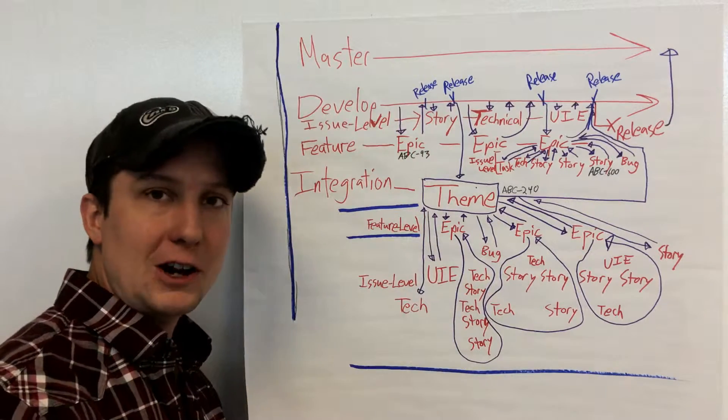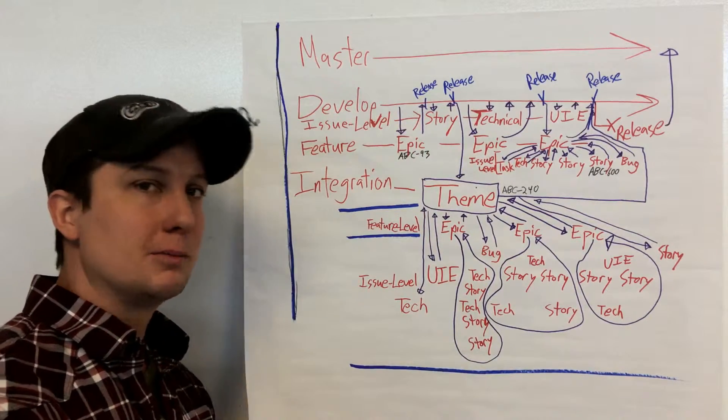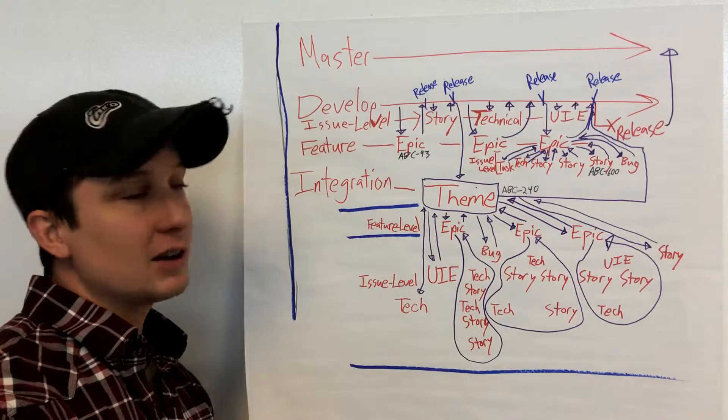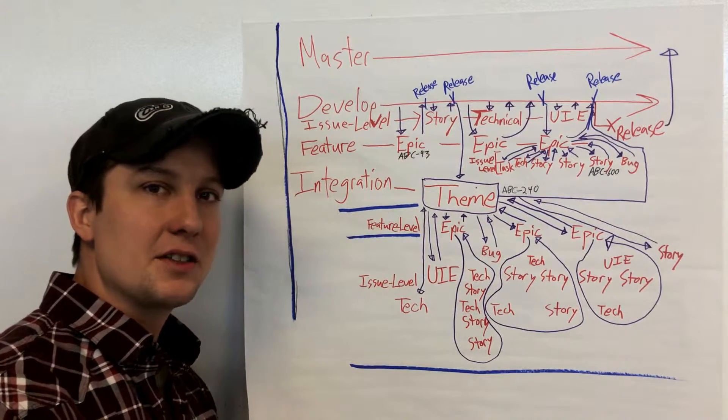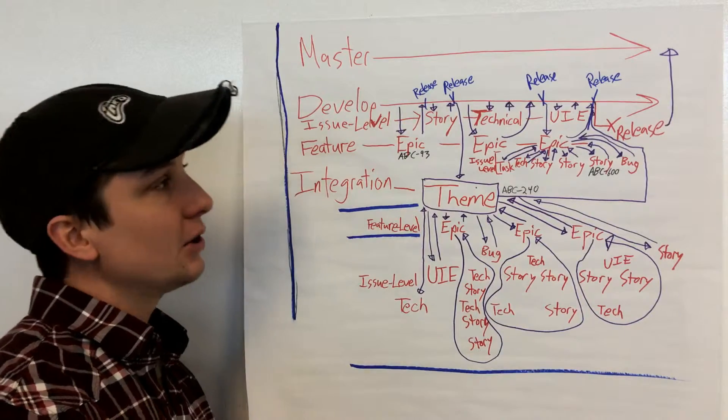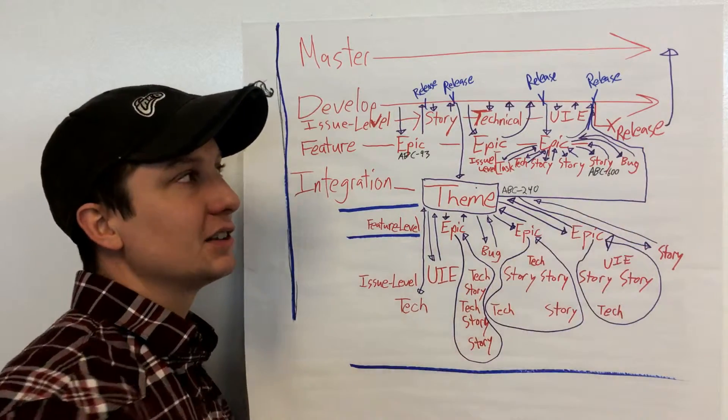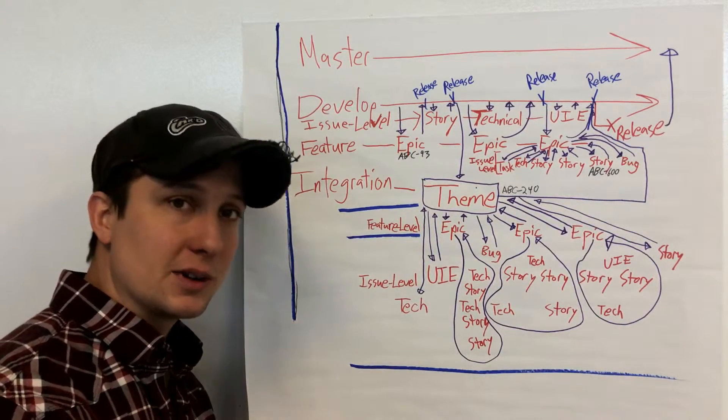Off of master, you want to branch to have a develop branch. And develop needs to represent whatever you could possibly release the next time you release. You don't want to create a release branch until immediately before you're going to release.